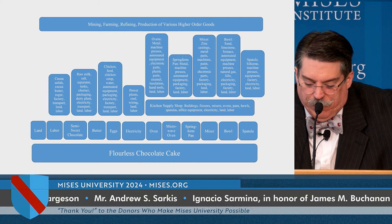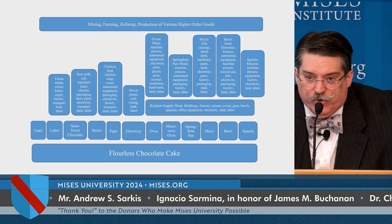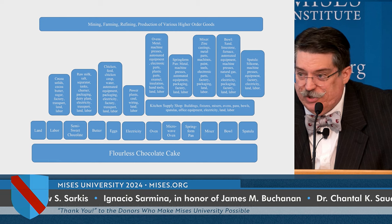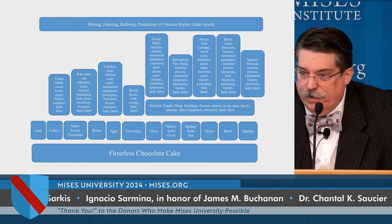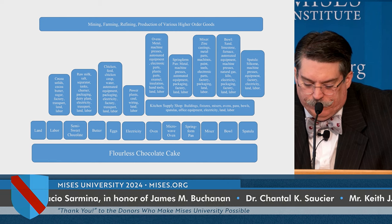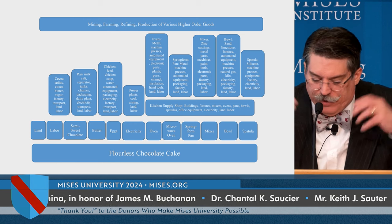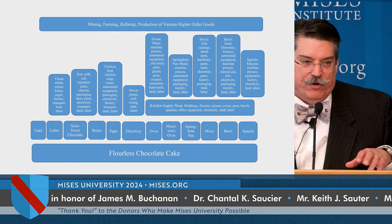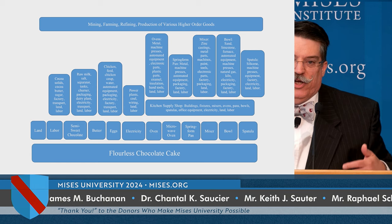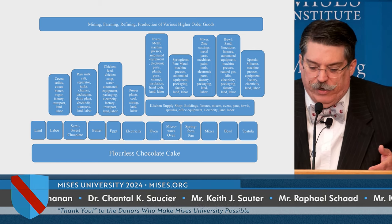The mixer requires zinc castings, metal parts, machines, paint, tools, electronic parts — it is an electronic appliance — a factory where all these things are put together, and then packaging, land and labor. So there is an even higher stage above the mixing stage.